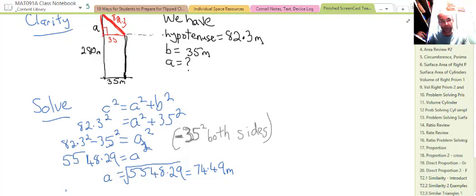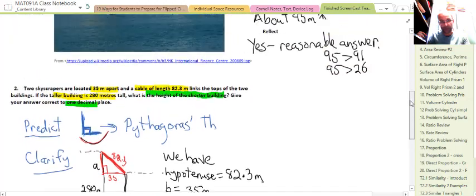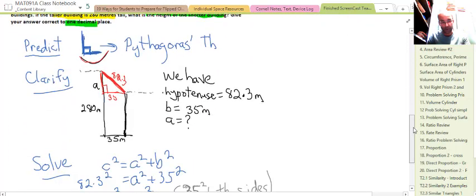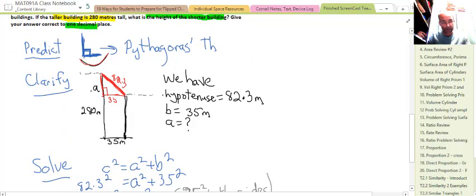Now we need to take the square root. We get 74.49 once we've taken the square root. Now what is this? What does this mean? This number 74.49 is a, so that's 74.49, that distance a.